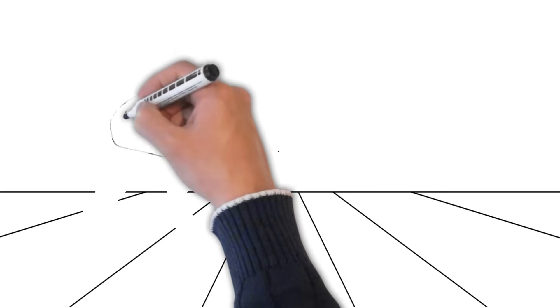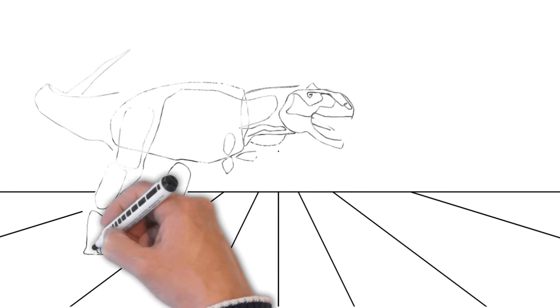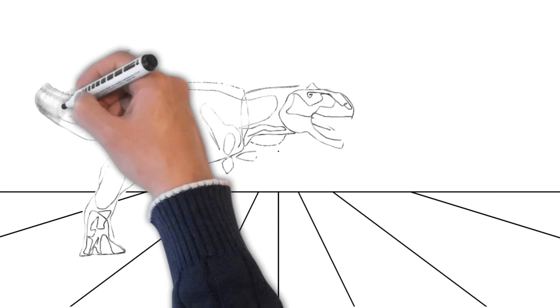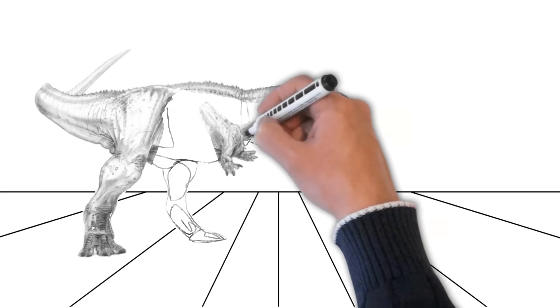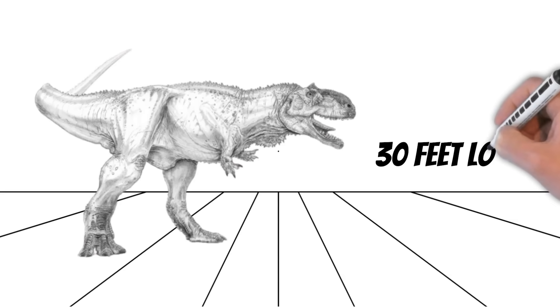Our first stop introduces us to Rajasaurus, a fierce predator whose name means King of the Lizards. Rajasaurus lived around 67 million years ago during the late Cretaceous period. It was a large carnivore, about 30 feet long, and had a short, bumpy crest on its head.